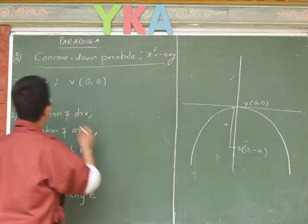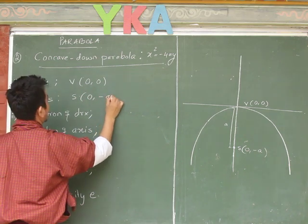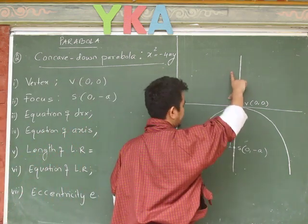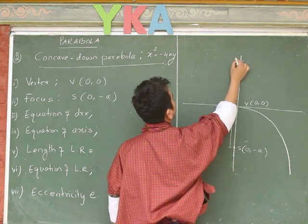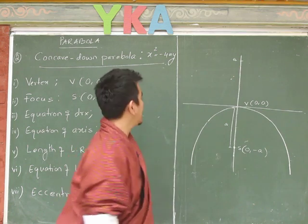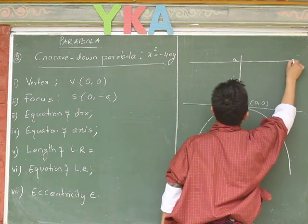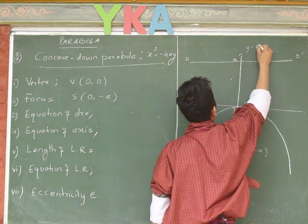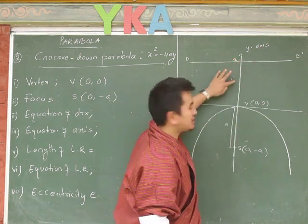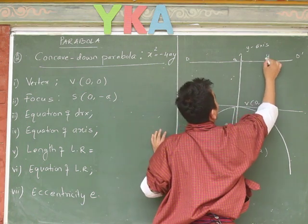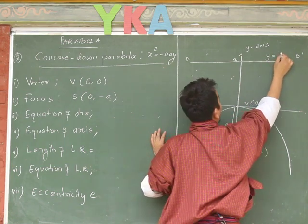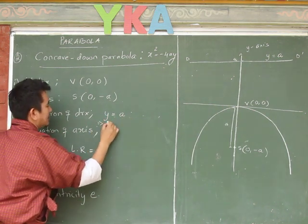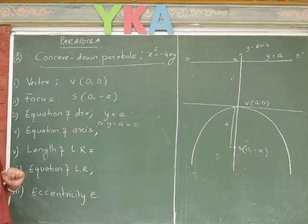The focus point is (0, -a). Now for the equation of the directrix: the same distance 'a' is measured on the opposite side, so that point becomes positive a. Since the directrix intersects the y-axis and passes through point a, the equation of the directrix is y = a, or equivalently y - a = 0.